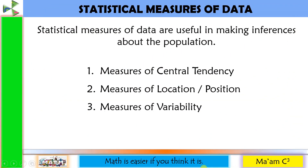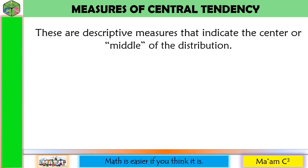Today, we will be talking about statistical measures of data. Statistical measures of data are useful in making inferences about the population. We have three statistical measures: measures of central tendency, measures of location or position, and measures of variability. In this video, we will talk about measures of central tendency. Measures of central tendency are descriptive measures which indicate the center or middle of the distribution. We have the mean, median, and the mode.